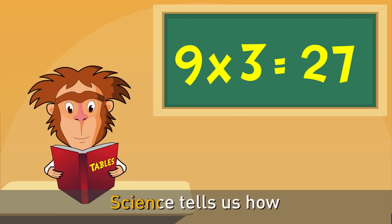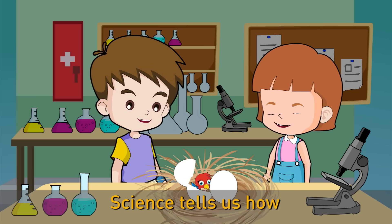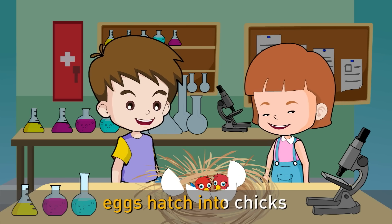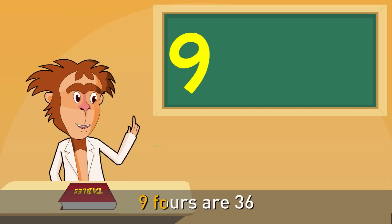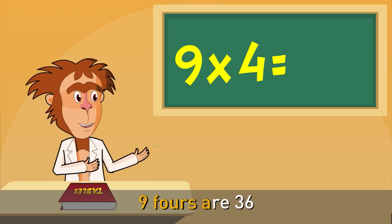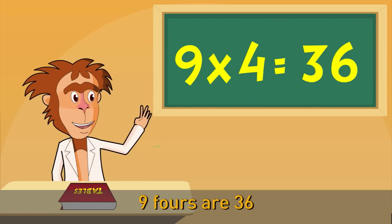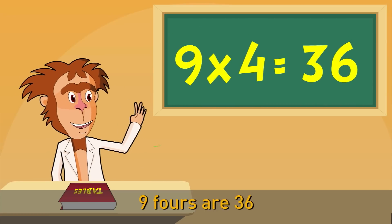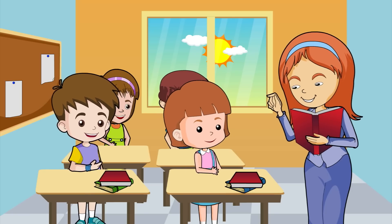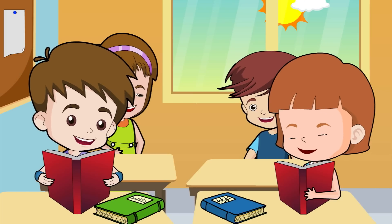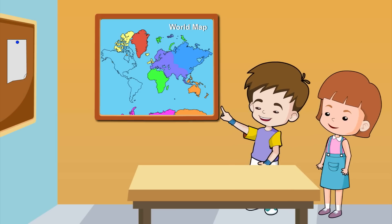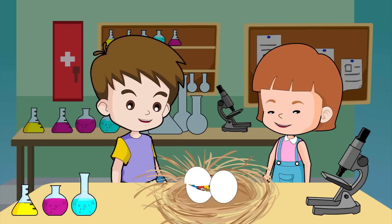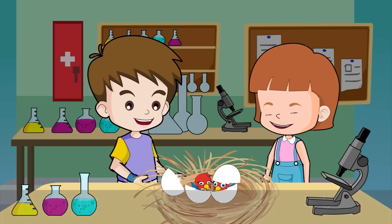Science tells us how eggs hatch into chicks. 9 fours are 36. We've learnt the 9 times table up to 4. Next up we have number 5 — let's go!